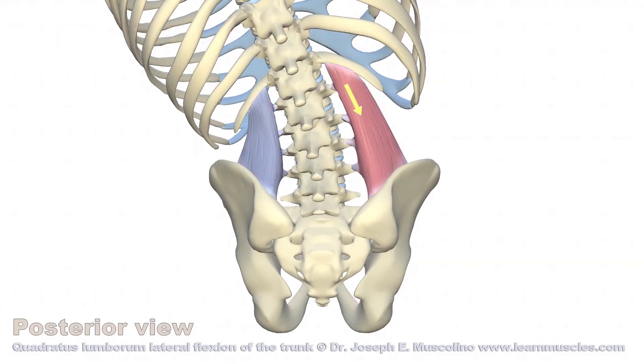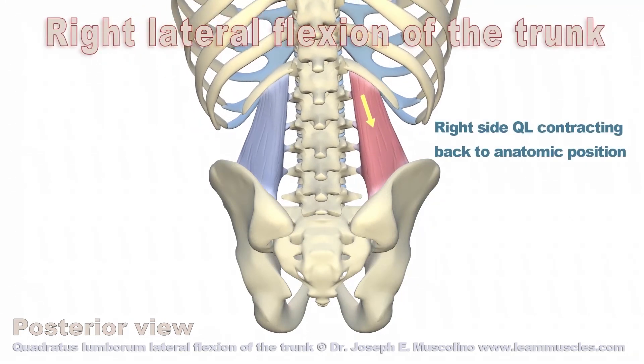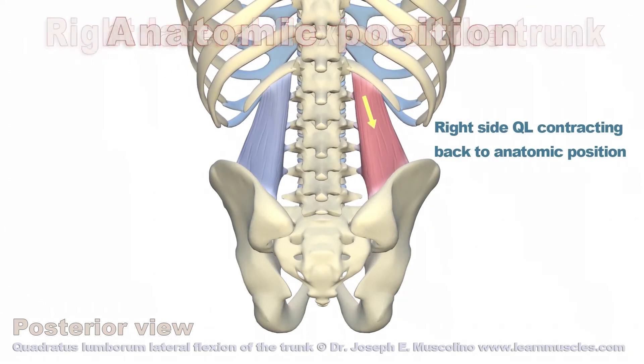Now we see the line of pull for the right QL again. When the right QL contracts, it right laterally flexes the trunk back to anatomic position.